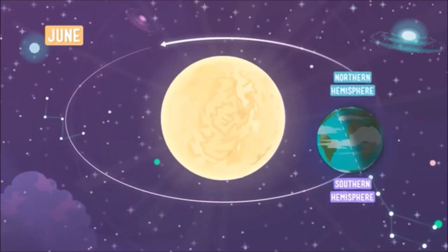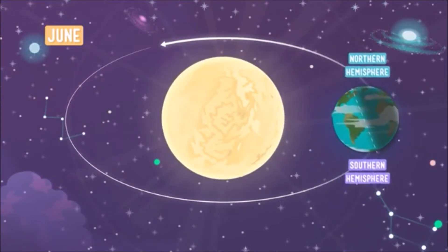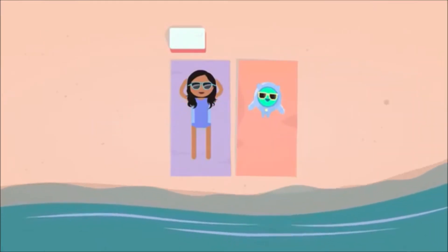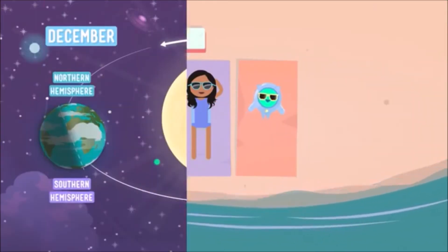In June, the northern hemisphere is tilted towards the sun. This means that it's getting a lot of direct sunlight, light that's hitting it straight on. If you've ever sat directly underneath a bulb, you know that things can get pretty hot, and that's exactly what's happening to the northern hemisphere. It's summertime and the living is easy. Temperatures are warm and days are long.